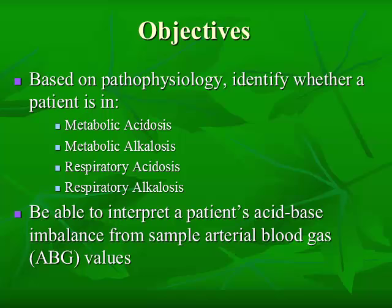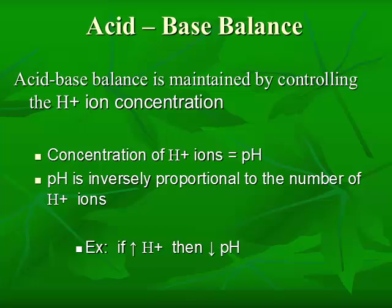This lecture is the acid-base lecture. The basic objectives are, based on pathophysiology, to be able to identify whether a patient is in metabolic acidosis, metabolic alkalosis, respiratory acidosis, or respiratory alkalosis, and to be able to interpret a patient's acid-base imbalance from a sample of arterial blood gas or ABG values, and to determine whether the patient is fully compensated, partially compensated, or uncompensated.